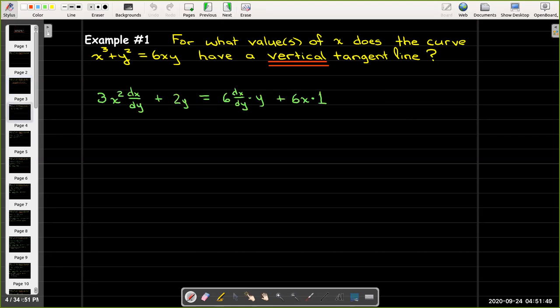So let's go ahead and differentiate x³ + y² = 6xy with respect to y. So we'll have 3x² and we'll have to apply the chain rule to get dx/dy plus 2y equals, and then on the right-hand side we will be using the product rule. 6 times x will be my f function and y is my g function. So the derivative of the first is just going to be 6 times dx/dy times the second which is just y plus the first times the derivative of the second.